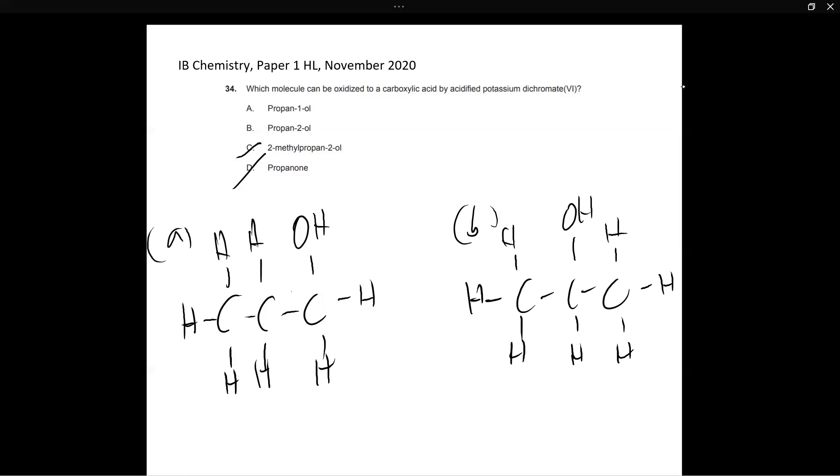Now out of both these structures, the right answer is actually A. Why? Because if you look at the carbon to which the hydroxyl group is attached to, this carbon is only attached to one other carbon. And that means that this is a primary alcohol. So if you oxidize a primary alcohol, it will first be converted into an aldehyde and it will then be converted into a carboxylic acid if you continue the oxidizing process.